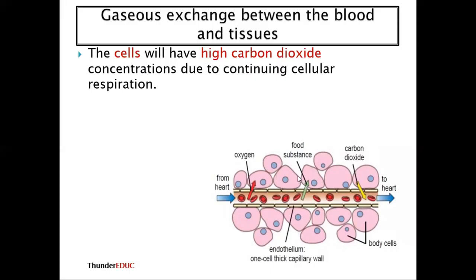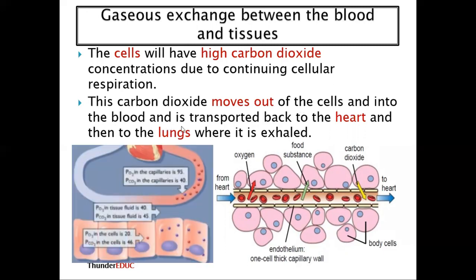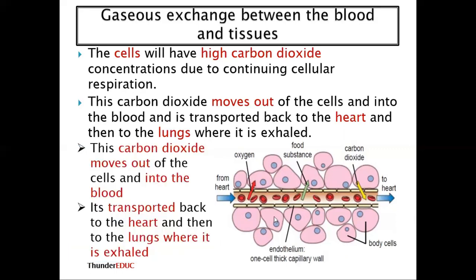When the blood reaches the tissues, the cells have a high concentration of carbon dioxide because respiration has taken place there. Carbon dioxide moves out of the cells into the blood. It is then transported back to the heart and to the lungs where it is exhaled.